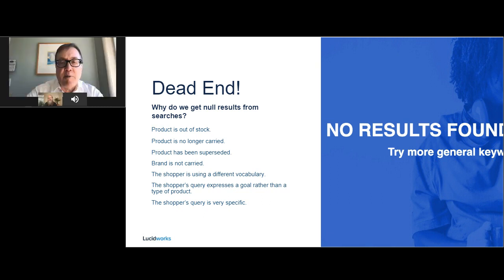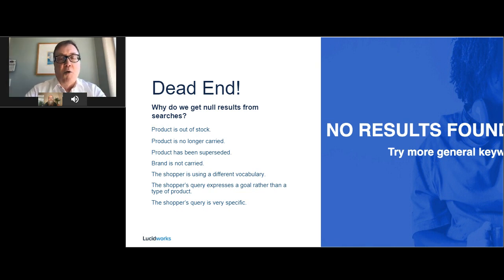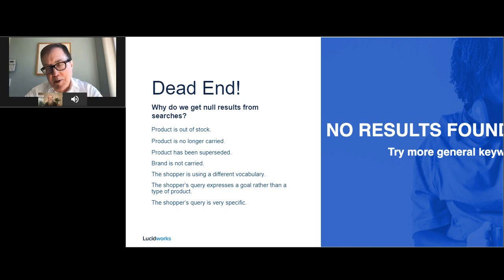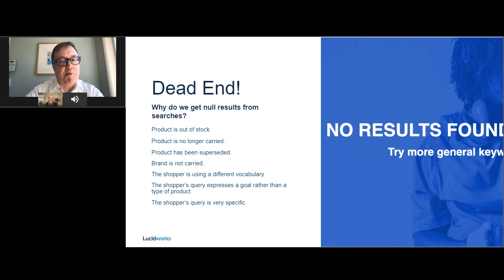The bottom item on the list is when the shopper's query is very specific — where the specifications are very important to them, such as color, size, or compatibility with another product they already have. We have approaches with lexical search to deal with these, but one of the older ones is partial match. The problem is that partial match isn't really knowledgeable about what parts of the query are super important and what parts are not.